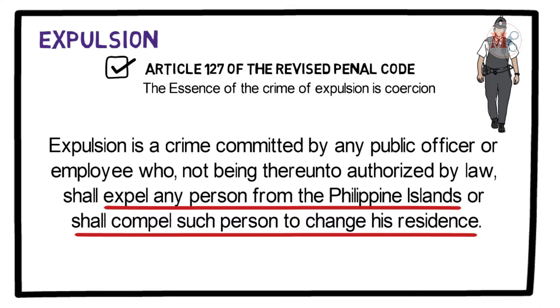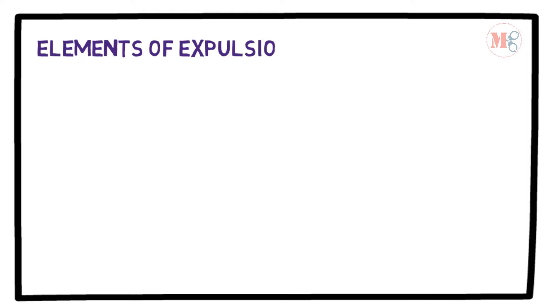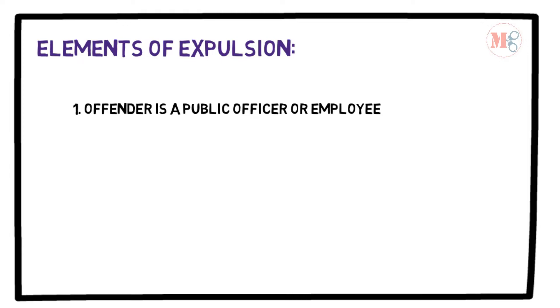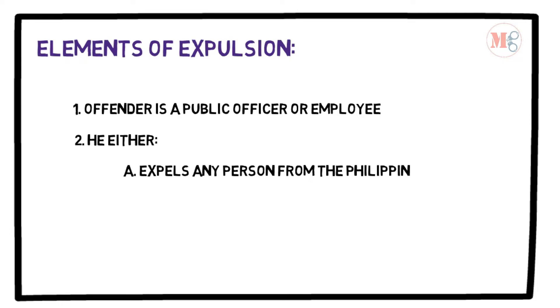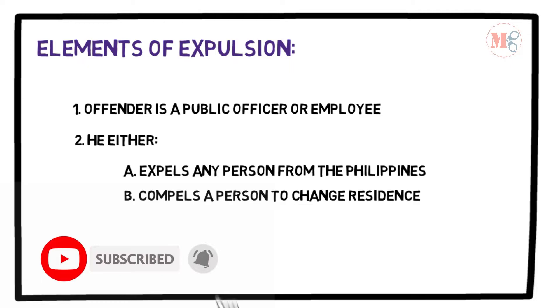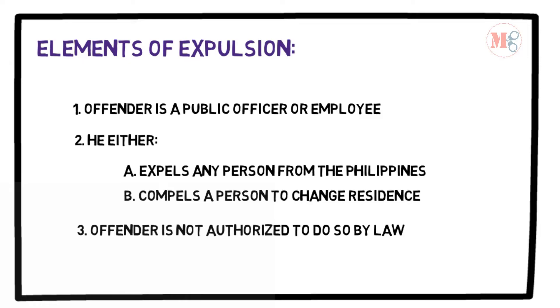This is the penal sanction for violation of the right of abode and of changing the same. From Article 127, we can now enumerate the elements of the crime of expulsion, to wit: First, offender is a public officer or employee. Second, he either expels any person from the Philippines or compels a person to change residence. Third, offender is not authorized to do so by law.